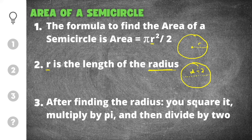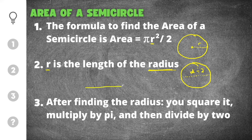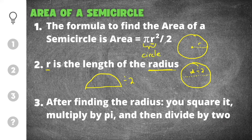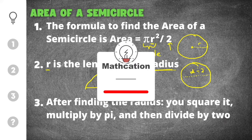After finding the radius, you square it, multiply by pi, and then divide by two. We're finding the area of a semicircle, which is half of a circle — this is why we divide by two. Technically the formula finds the area of a full circle, but because it's a semicircle you divide by two since it's one half of the full circle's area.